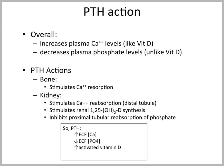The actions of PTH increase calcium levels, similar to vitamin D. But unlike vitamin D, PTH decreases plasma phosphate levels. On bone, PTH mainly stimulates calcium resorption. On the kidney, it increases calcium reabsorption in the distal tubule and activates vitamin D. It inhibits proximal tubular reabsorption of phosphate, leading to lower phosphate levels. In summary, PTH raises extracellular ionized calcium, lowers phosphate, and increases 1,25-hydroxyvitamin D.